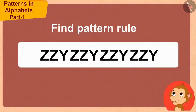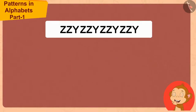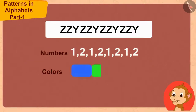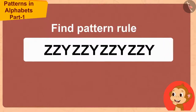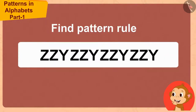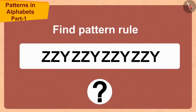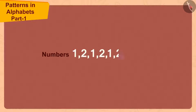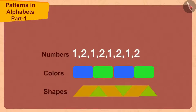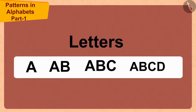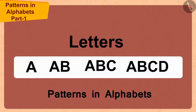Babban was baffled for a while. 'I have seen patterns made of numbers, colors and shapes. But in this pattern, I can see only the letters.' Children, have you seen such a pattern before? Like we make different patterns from numbers, colors and shapes, similarly we can also make patterns by using letters.